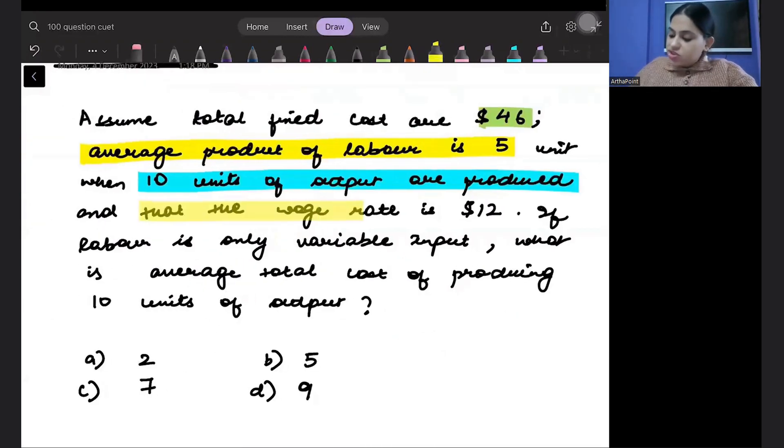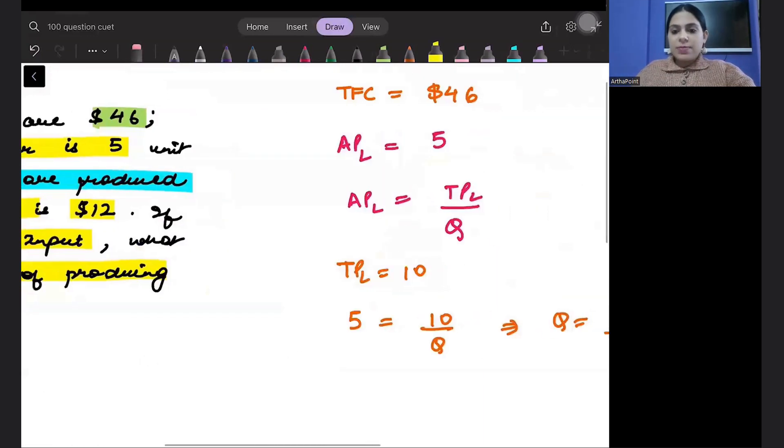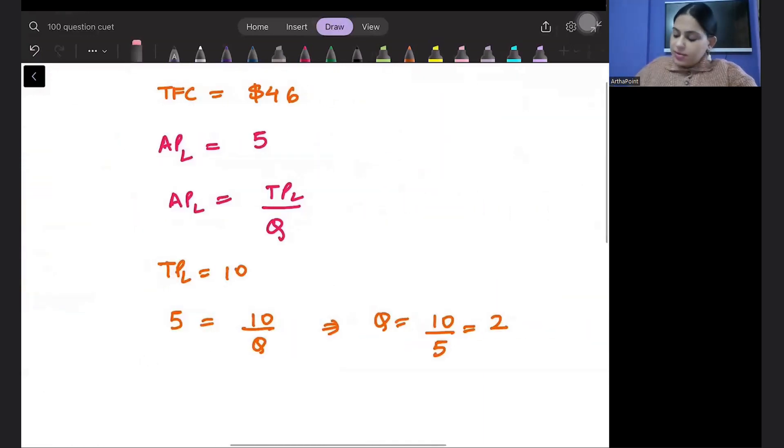The wage rate is 12. If labour is only variable input, what is average total cost of producing 10 units of the output? So this will be L. Total product divided by the number of labour. By mistake I wrote Q here.